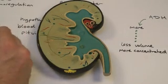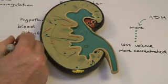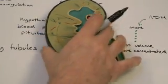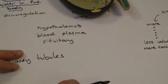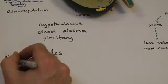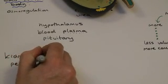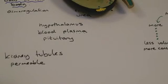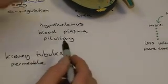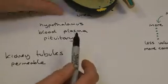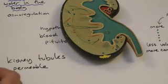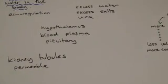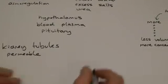What does the hormone ADH actually do? It makes an area of the kidneys called the kidney tubules more permeable to water. By releasing ADH, these tubules become more permeable to water and they start to absorb more water back into the blood. That's what ADH is physically doing inside the kidney.